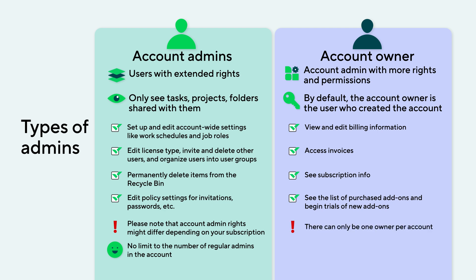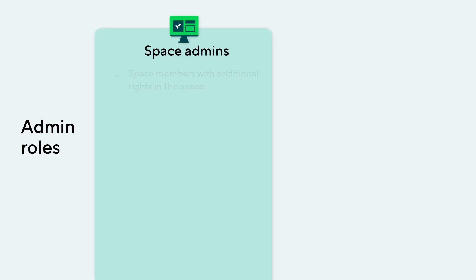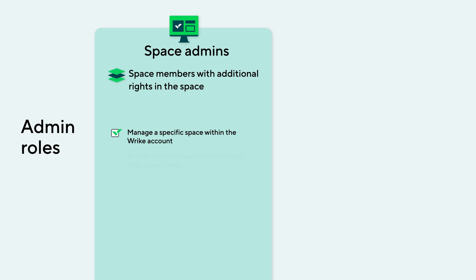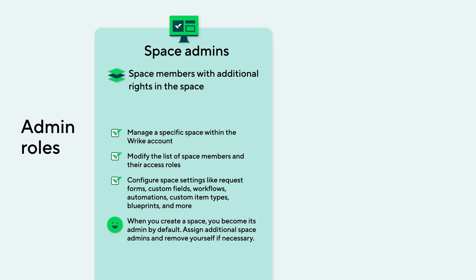There can only be one owner per account. Speaking of different admin roles in Wrike, there are also space admins — account users who, as opposed to space members, have the right to manage a specific space within the Wrike account, modify the list of space members and their access roles, and configure space settings like request forms, custom fields, workflows, automations, custom item types, blueprints, and more. When you create a space, you become its admin by default. You can assign additional space admins and remove yourself from the list of admins if necessary. Each space must have at least one admin.